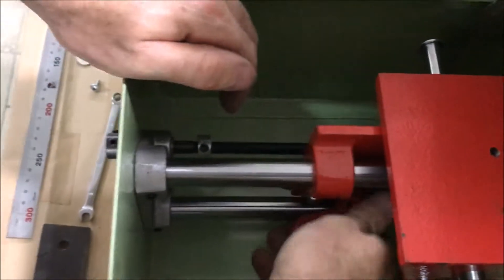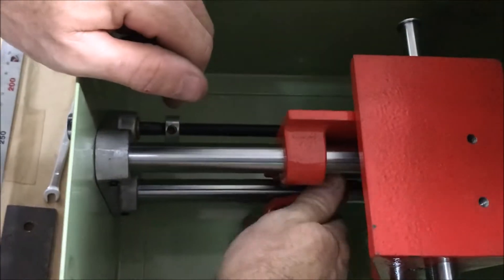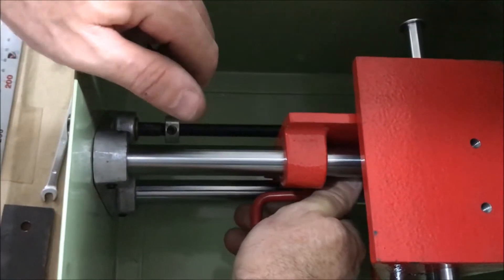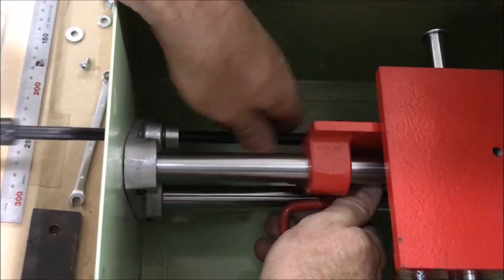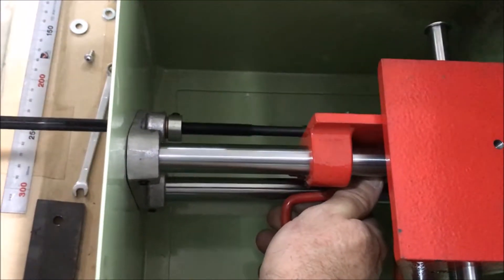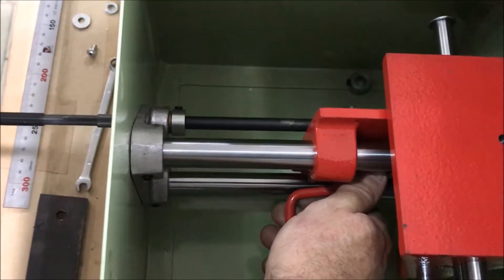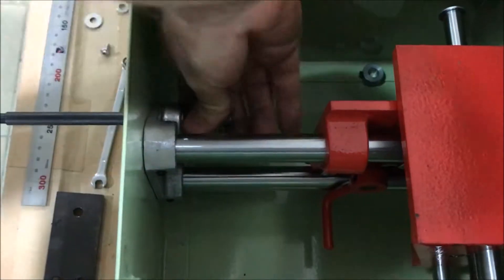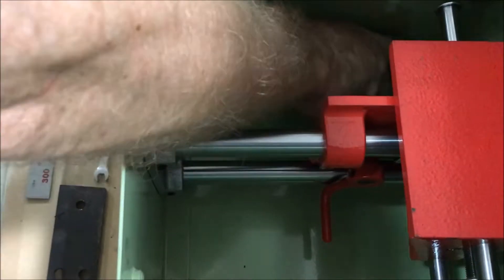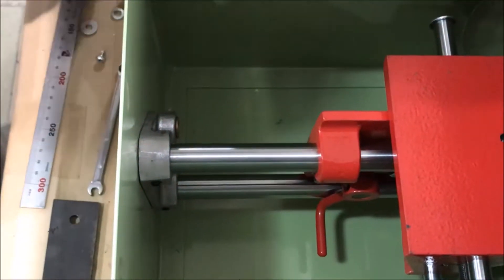So to pull that feed screw out then, we're going to rotate that feed nut enough that it allows it to slide, but not so much that we overextend the spring. Okay, so I'm going to pull that out, and our collars are going to come off and usually drop down into your saw.